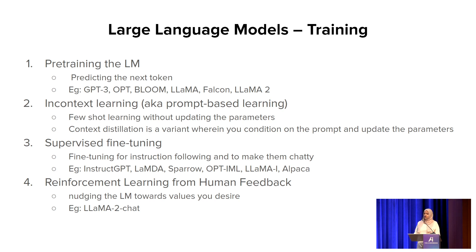The fourth type of fine-tuning is reinforcement learning with human feedback (RLHF). You take human preference data and fine-tune the model using reinforcement learning, with the goal of nudging the language model towards desired values — in most cases being helpful, honest, and harmless. An example of this is the LLaMA 2 Chat model.